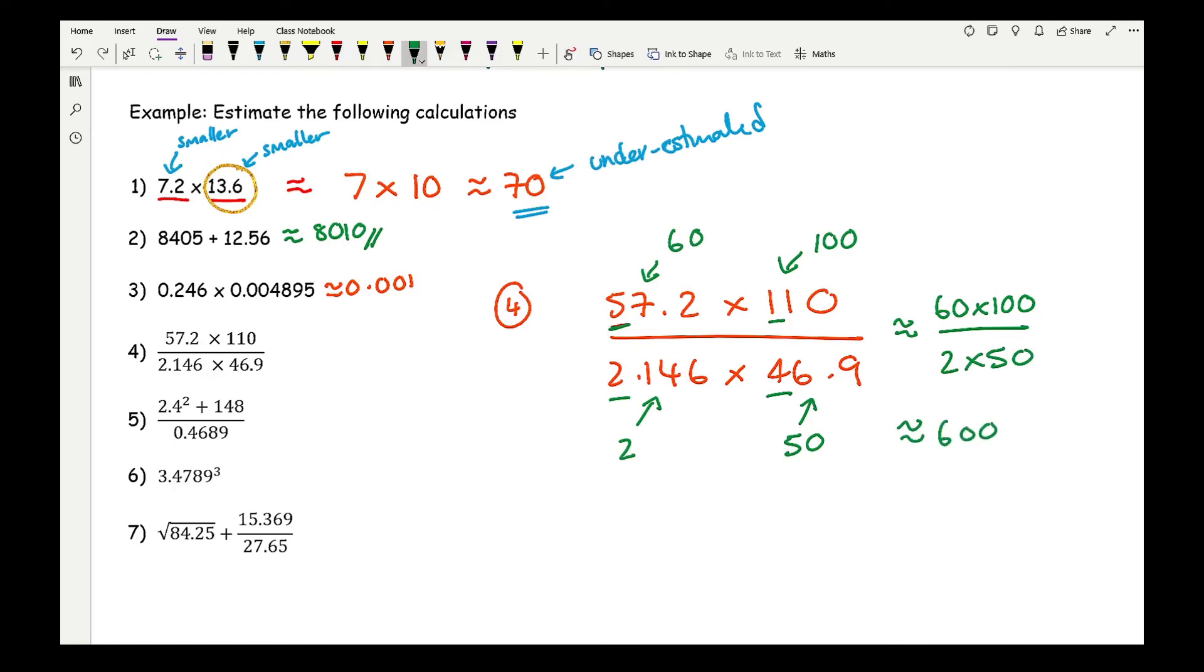So looking at the estimated answer, I've got 60 times 100 divided by 2 times 50, which then becomes 6000, and then at the bottom we're going to have 2 times 50, which is 100. And then I can cancel the zeros, leaving me with a final answer of 60.